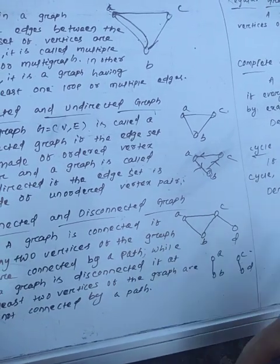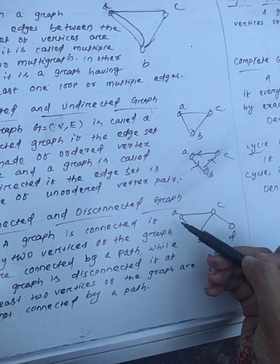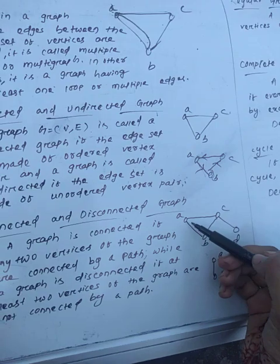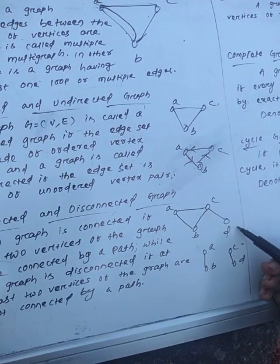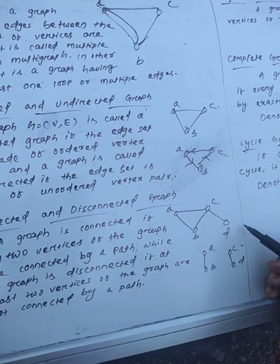If we take any two vertices, say A and D - is this path connected or not? If we take A and C, or A and D, there is...